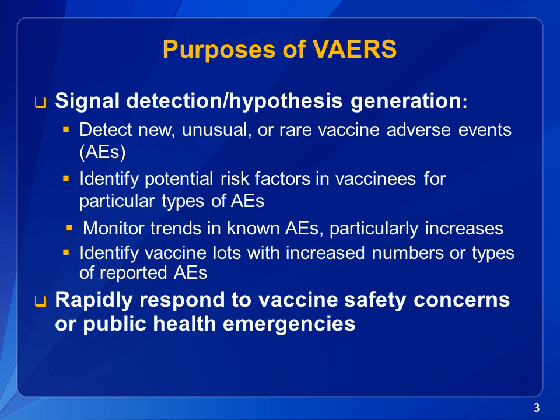The purpose of VAERS is to detect new, unusual, or rare health problems that occur after vaccination. We refer to these as vaccine adverse events. VAERS is also used to detect potential risk factors in people who have received vaccines for particular types of health problems, and to monitor trends in known adverse events. VAERS can also be used to identify vaccine lots with increased adverse events. Additionally, VAERS is used to respond to vaccine safety concerns and public health emergencies.